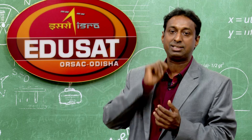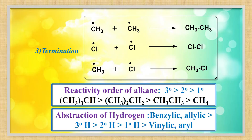Termination: once the reaction is over, two free radicals may recombine. In the reaction system you have CH3• and Cl• free radicals. Two CH3• may combine to give C2H6; similarly Cl• + Cl• may give Cl2; or CH3• + Cl• may give CH3Cl. During termination you are getting methyl chloride, ethane, and Cl2.